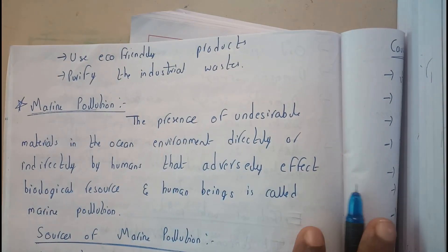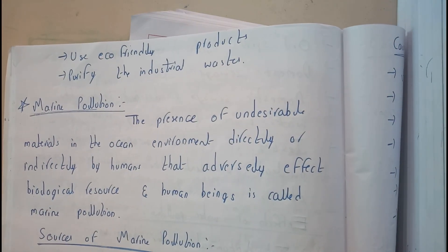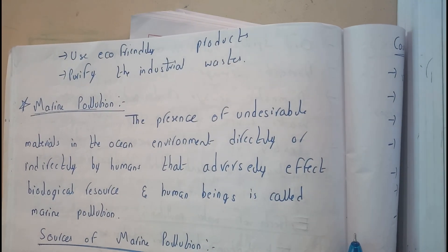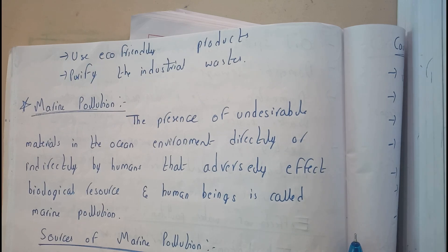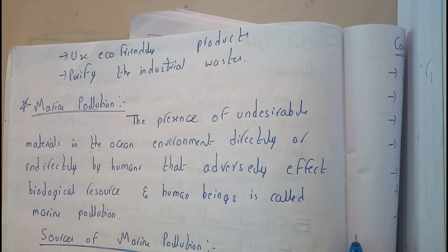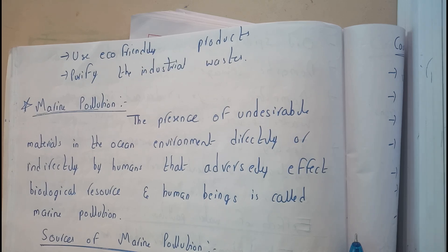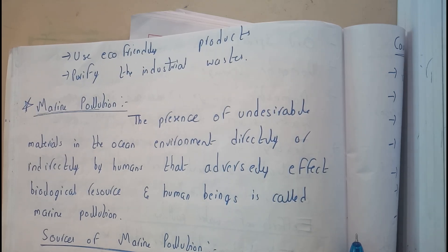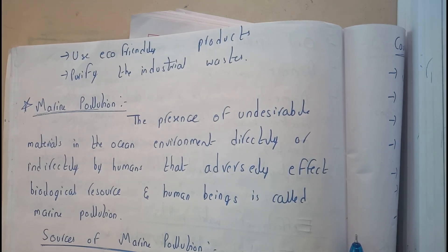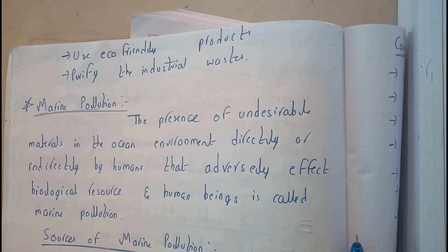This is the conclusion of water pollution. In this tutorial, we have learned what is water pollution, types and sources of water pollution, causes of water pollution, effects of water pollution, and prevention measures of water pollution. I hope everyone is clear with all the topics. Thank you guys, thanks for watching.